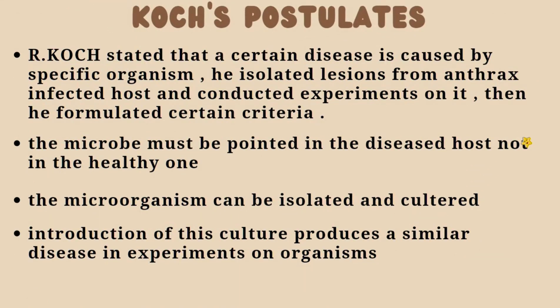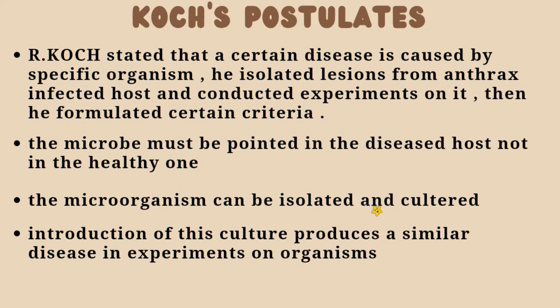Robert Koch stated that a certain disease is caused by a specific organism. He isolated lesions from anthrax-infected hosts and formulated the following criteria: the microbe must be found in the diseased host and not in a healthy one; the microorganism must be isolated and cultured; and introduction of that culture must produce a similar disease in experimental animals.